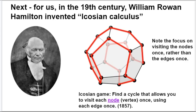Let's move forward in time to the 1850s and an Irish mathematician named William Rowan Hamilton. He was like the father of modern optics and did a lot of work in physics and applied math. One of the things he invented was something called the Eicosian Game, which relates to an area of math now called Eicosian Calculus.